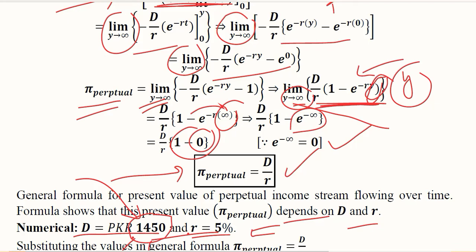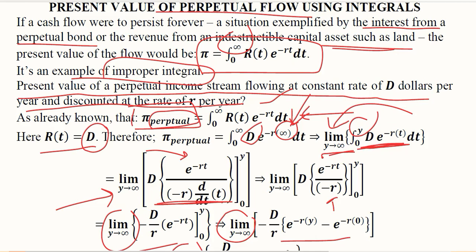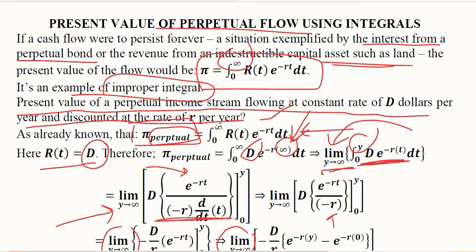These were the simple steps which were similar to the previous example, and finally we are now capable of dealing with situations where we can find out the present value of a perpetual flow that is likely to happen for an undefined period of time. This was possible by using improper integrals. Thank you.